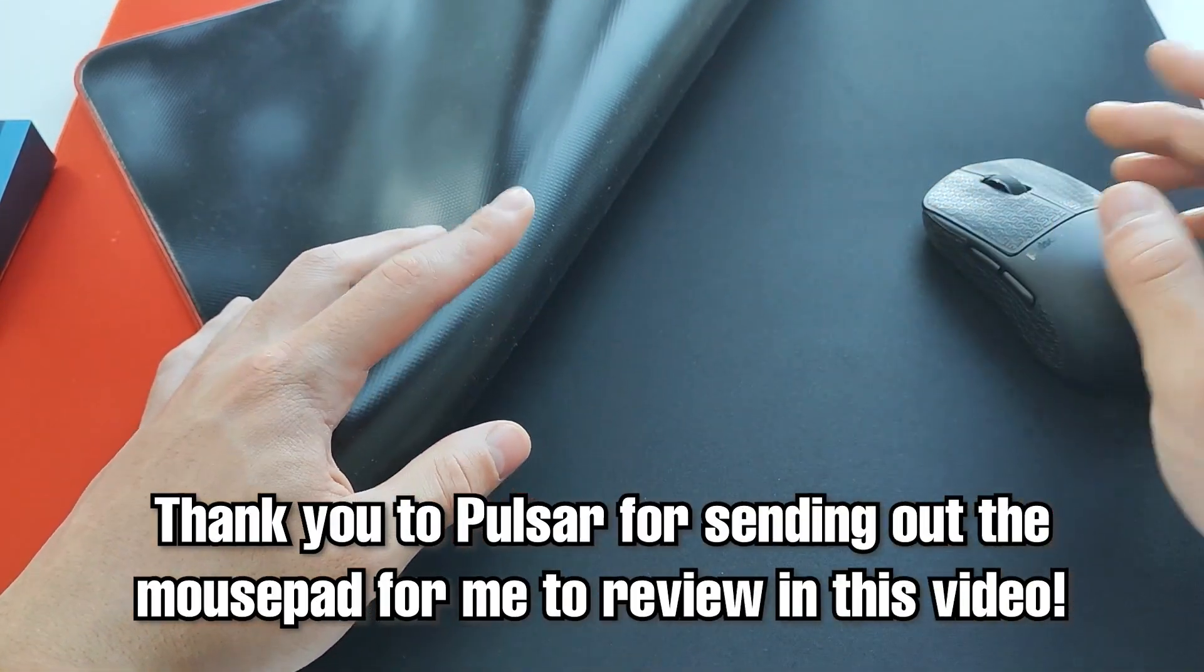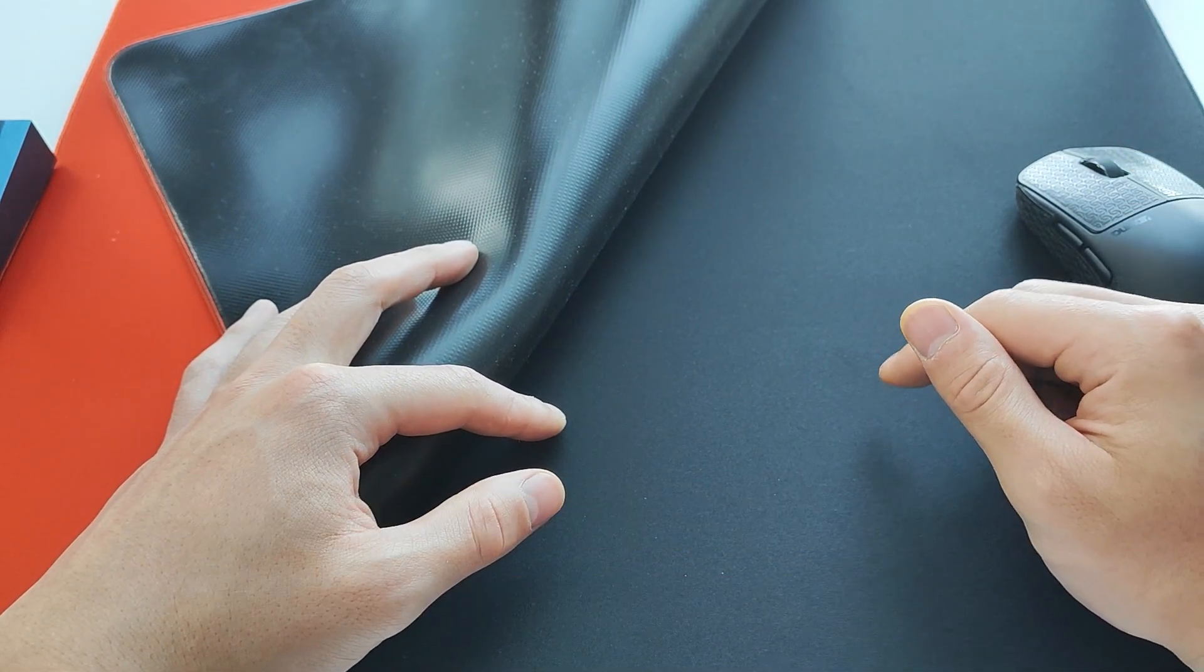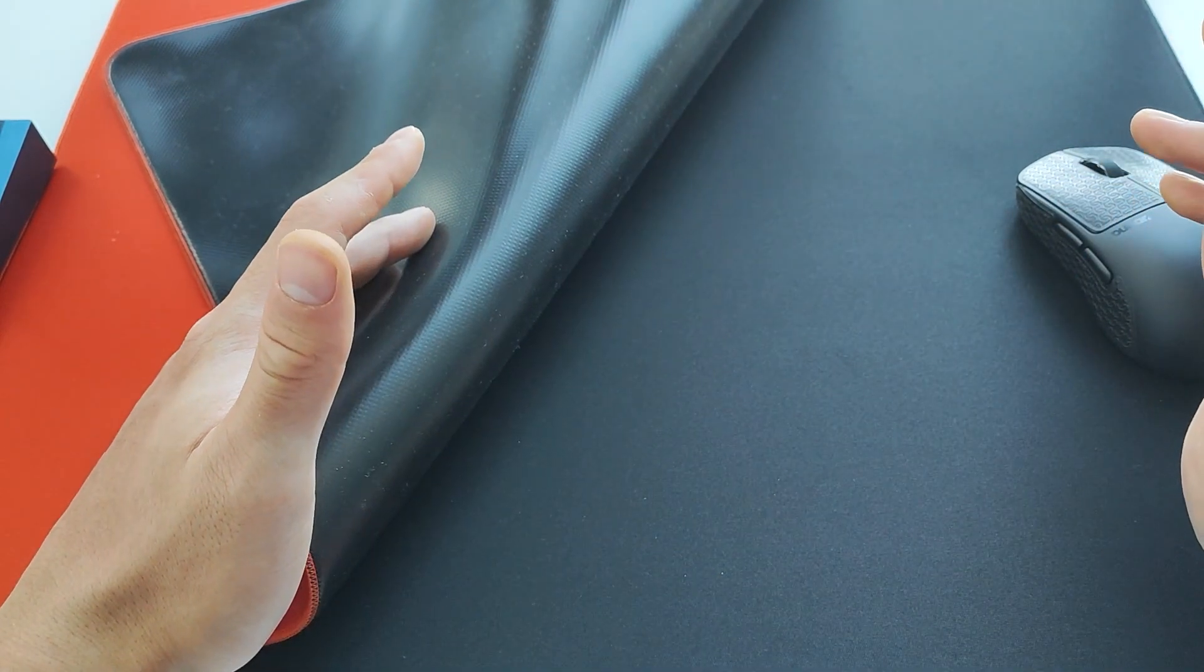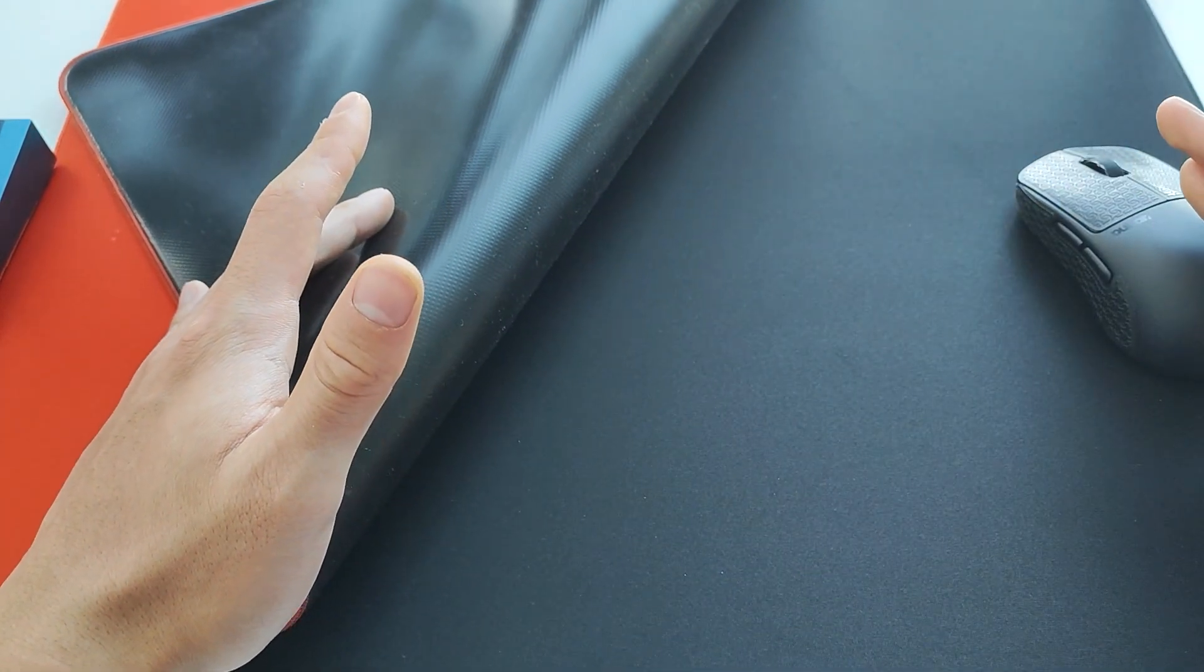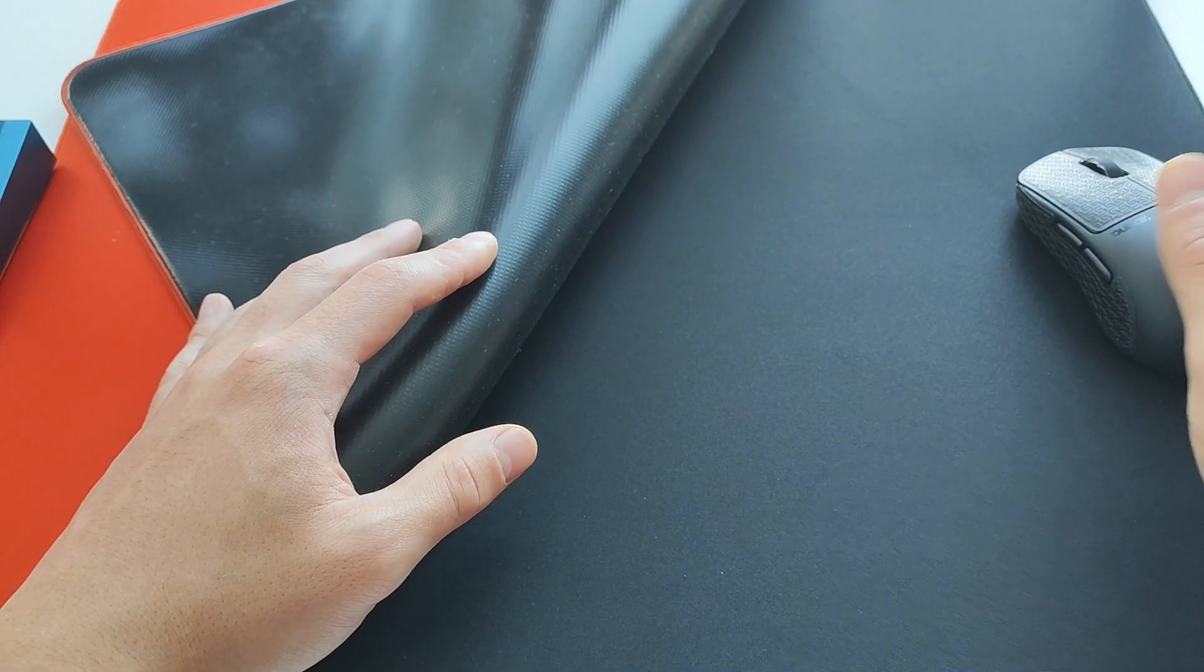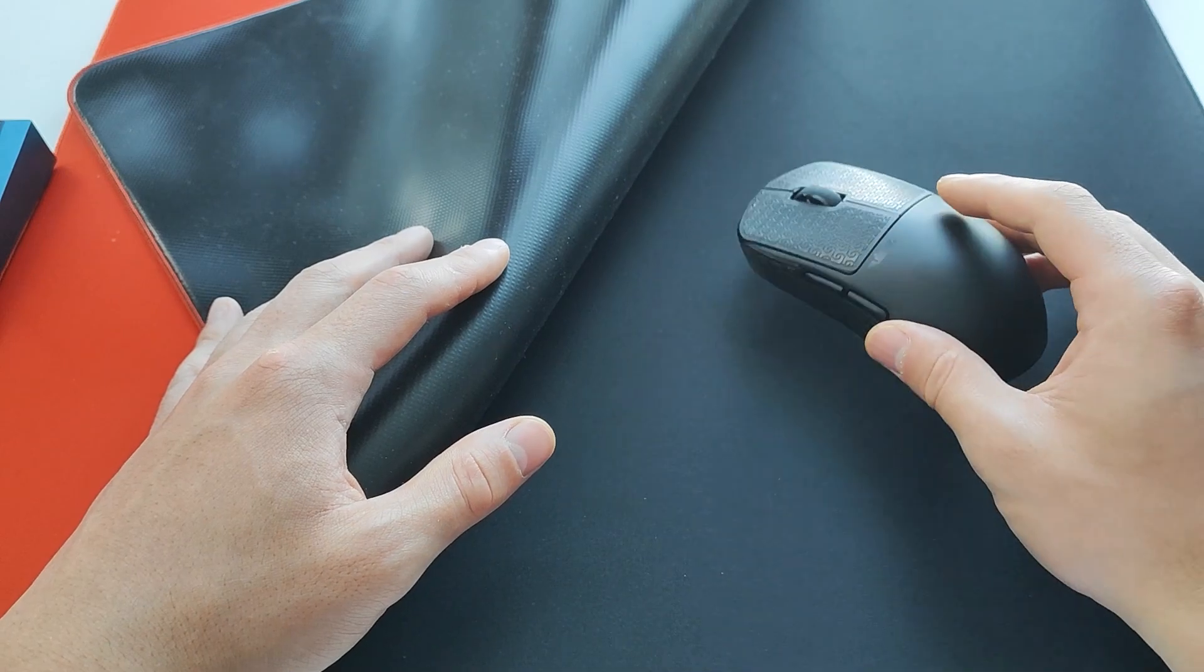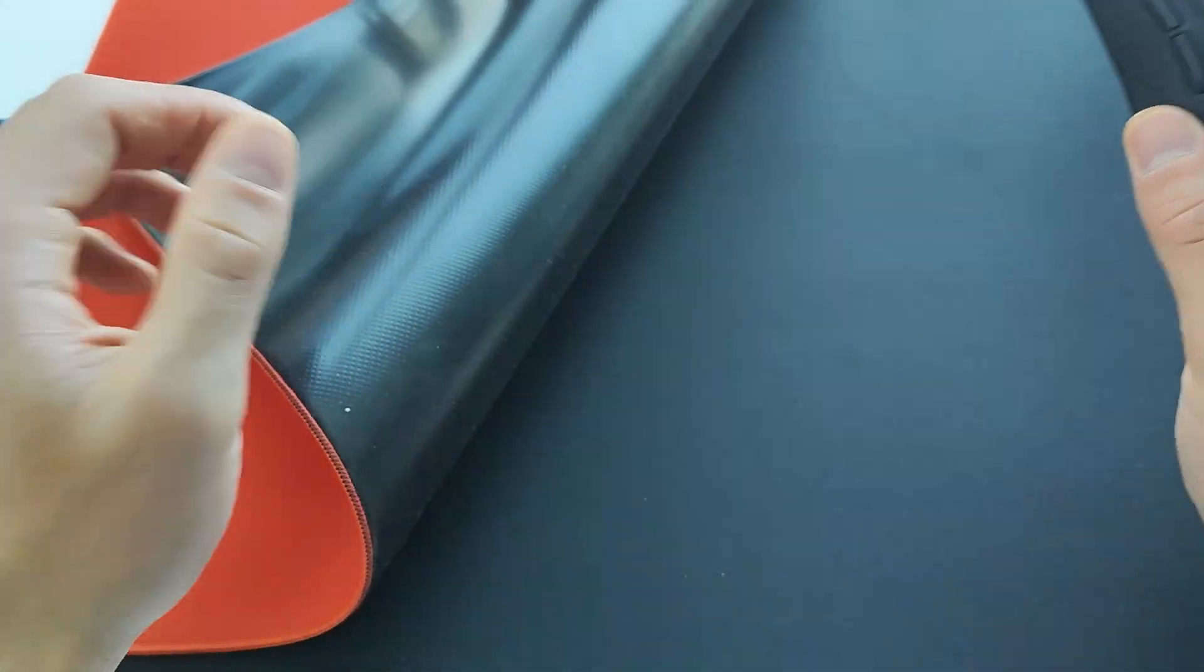So thanks to Pulsar for sending out the ES2 here. Pad is an absolute banger. I hope you guys can create a larger 500x500 version. That's the only thing I want in order to put this pad into my S tier. That's like the only change I want for this pad to become an S plus tier in my tier list. Now I look forward to reviewing future Pulsar releases, and I'll see you guys all in the next video, which is most likely about the X2H here. Peace.